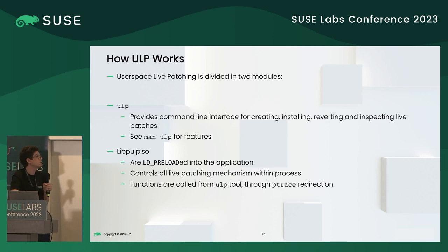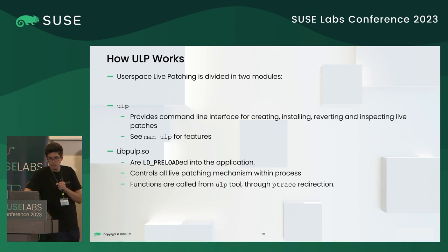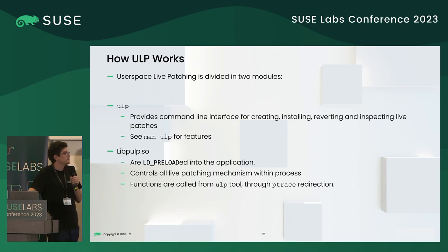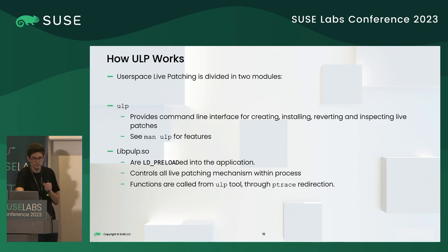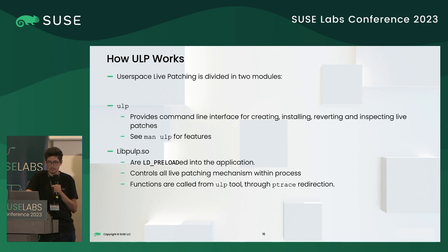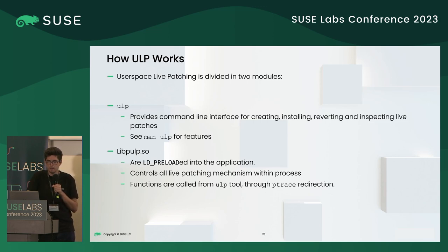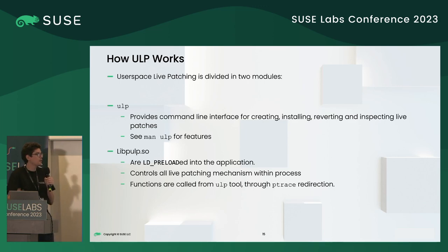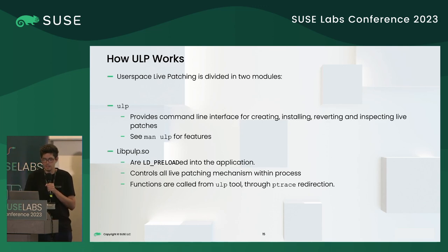The userspace livepatching mechanism is divided into two components. First is the ULP binary, which provides a command line interface for creating, installing, reverting, and inspecting livepatches — see the man page for more features and documentation. Second is the libpulp library, which is loaded into the application and controls all patching mechanisms within the process. Its functions are called from ULP through a ptrace interface.